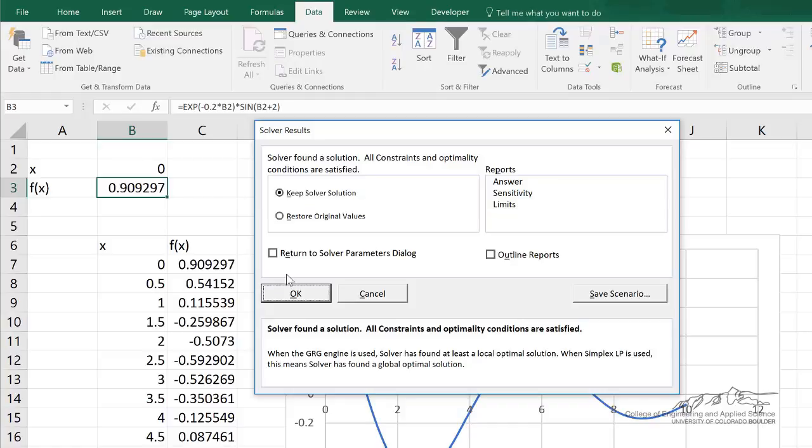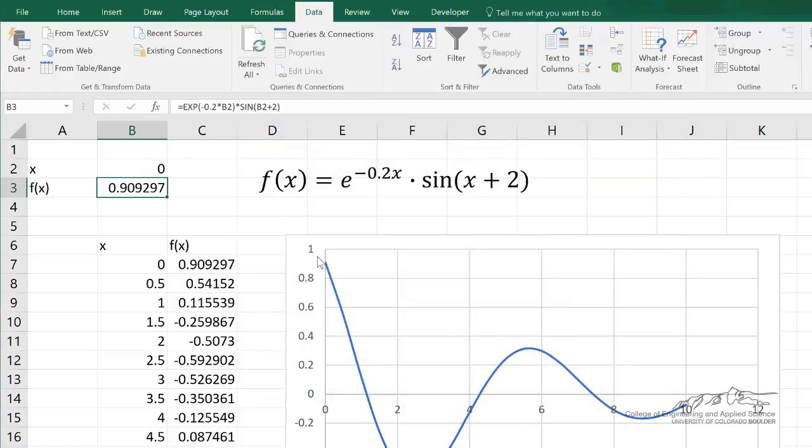And now I can click run. And you see now with negative values of x allowed and adding in a constraint that x has to be between 0 and 10, it's finding that the maximum value closest to 0 is about 0.91.